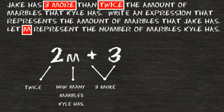So in front of the variable m, we have to write a coefficient of two. The coefficient that we write in front of the variable will multiply whatever the value of the variable is. And because we have twice the amount that Kyle has, we would have to multiply the number of marbles that Kyle has by two.